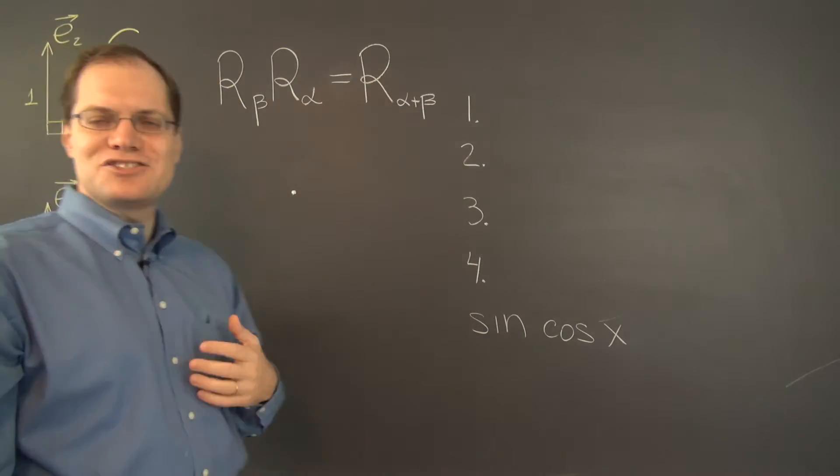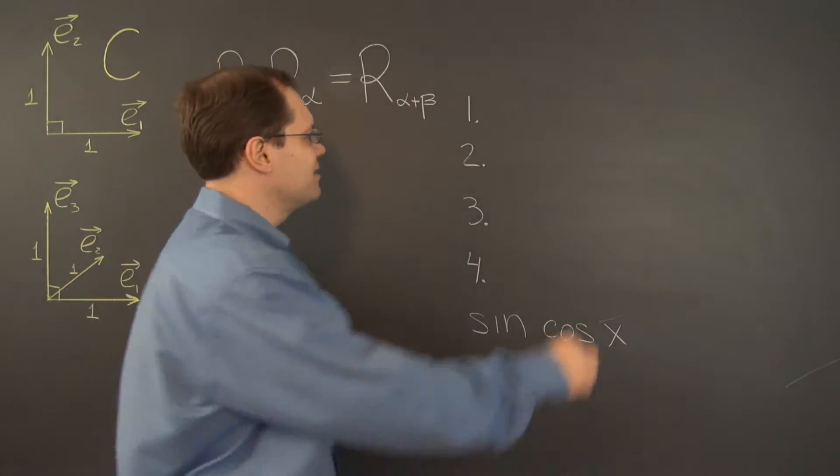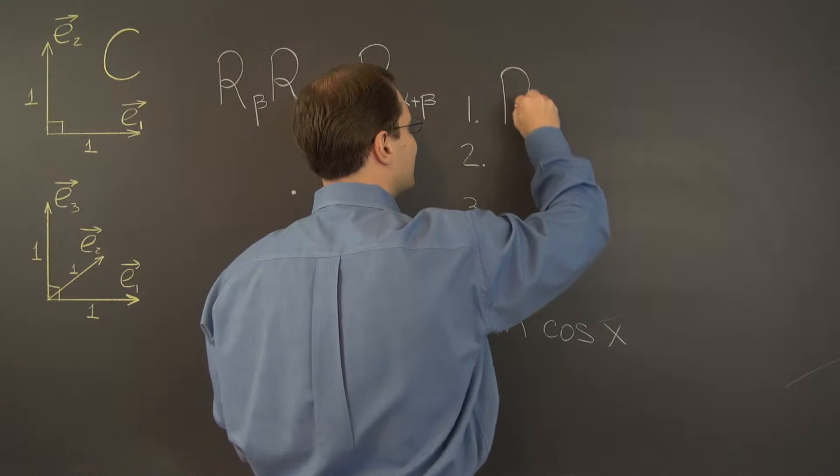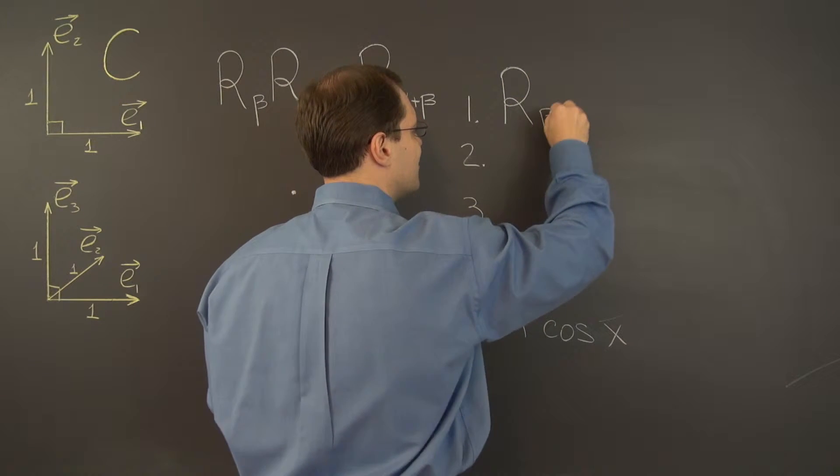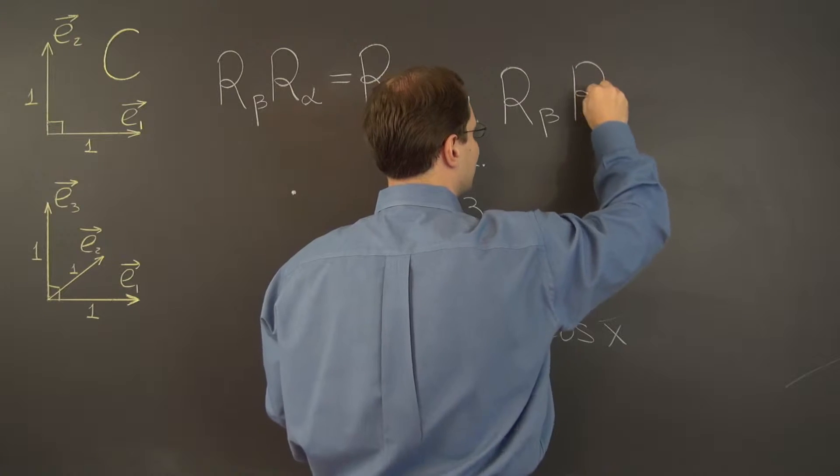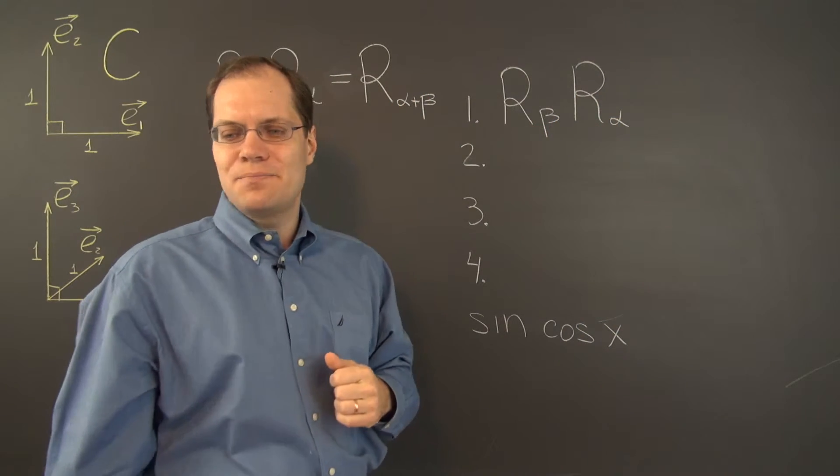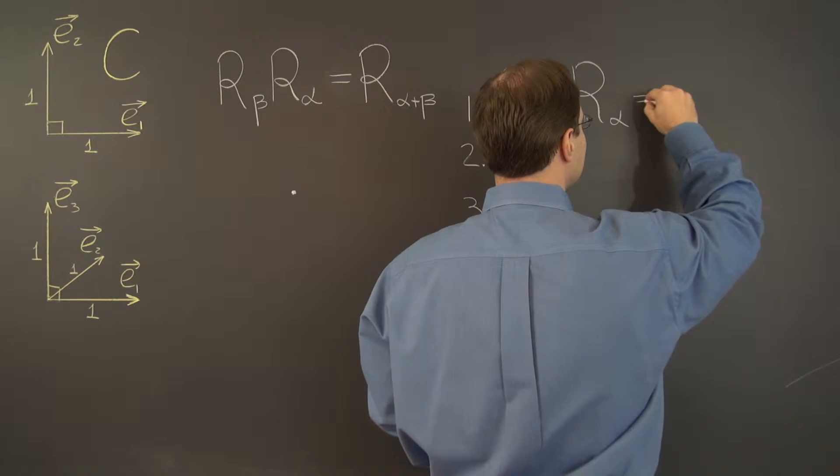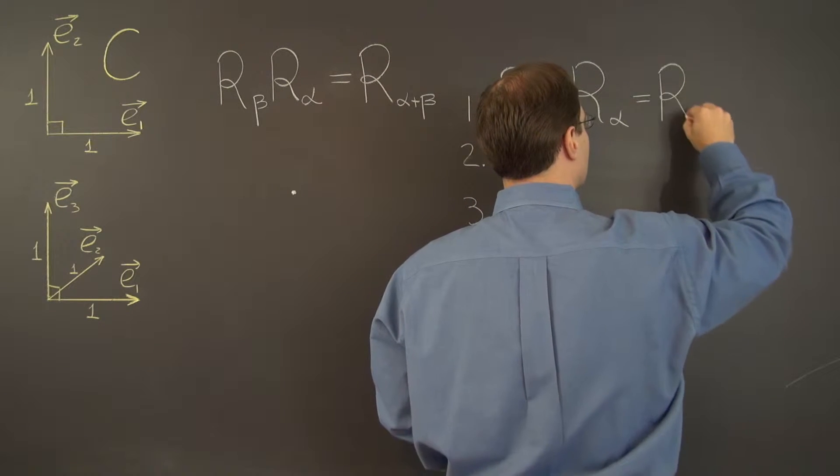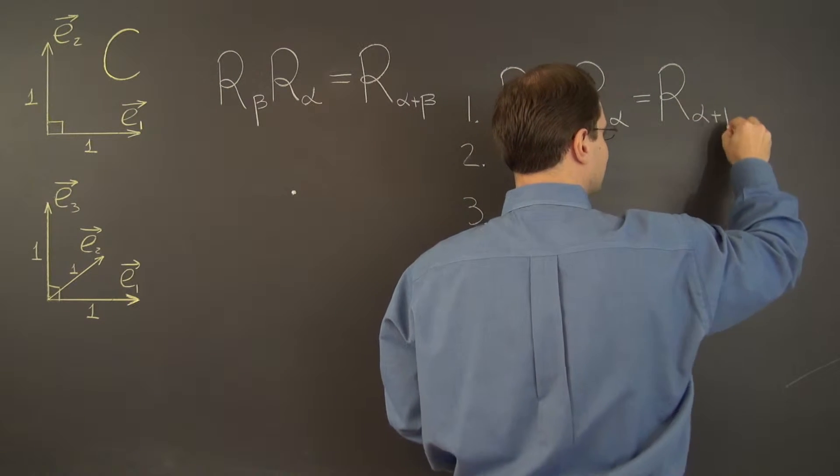And as we just said, the result is a single transformation by the angle alpha plus beta. So that's actually property number one and I will simply repeat it right here. R sub beta, R sub alpha followed up by R sub beta equals R of alpha plus beta.